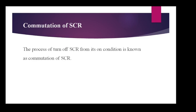Welcome to our channel P-SIM. Today's topic is voltage commutation and current commutation. Let us first understand what is commutation of SCR. The process of turn-off of SCR from its on condition is known as commutation of SCR. There are basically two methods of commutation of SCR.